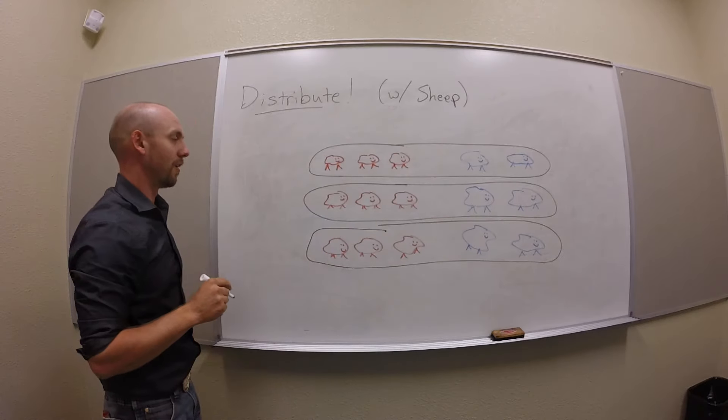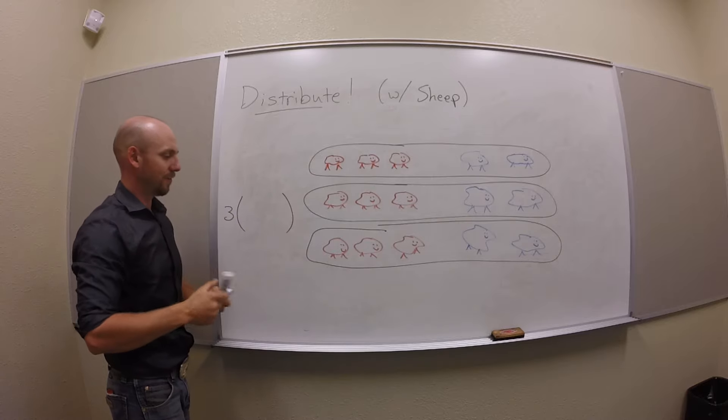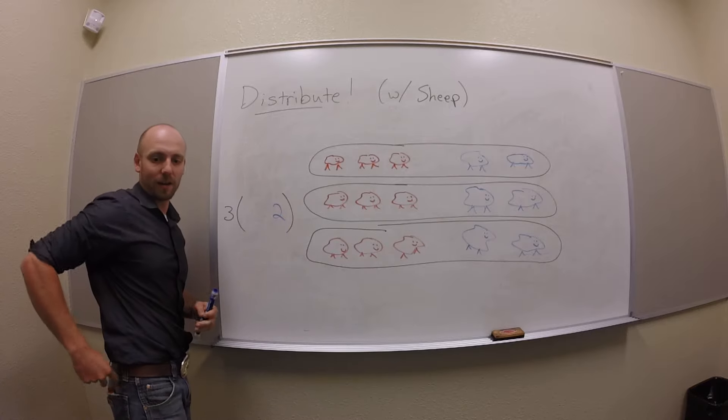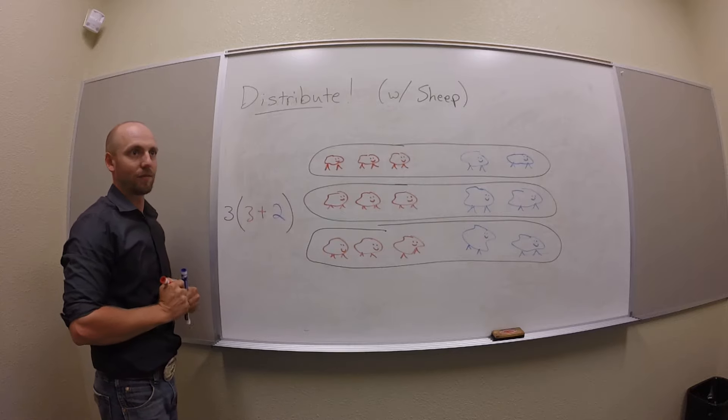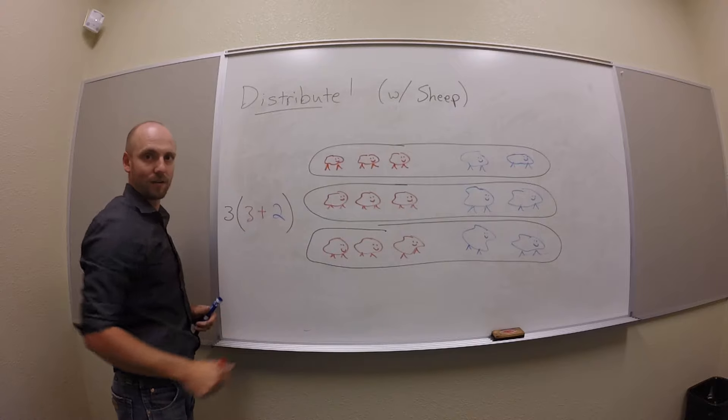At the moment, these are three groups, right? And each group is made of two blue sheep and three red sheep, okay? So when I think this way, I have three groups, each made of three red sheep and two blue sheep.